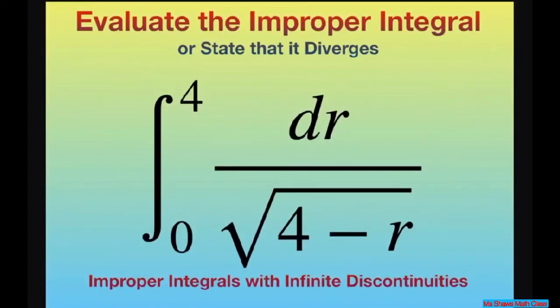Hi everyone. We're going to evaluate the improper integral or state that it diverges from 0 to 4, and our function is dr divided by square root of 4 minus r.